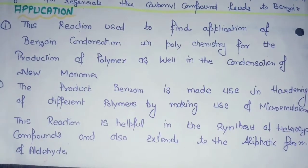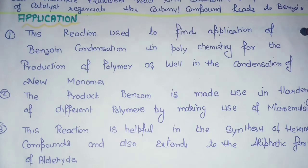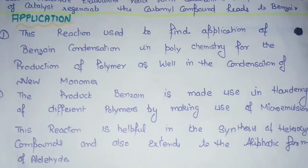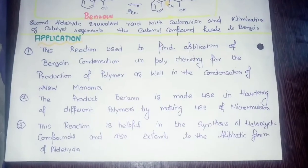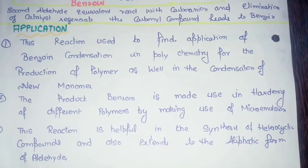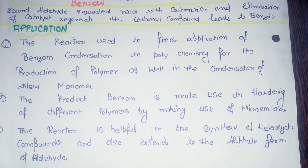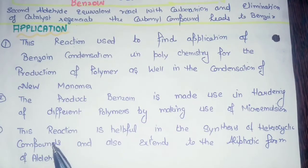It is obvious that polymers can be made by condensation, so it is related to polychemistry. We do it for new monomer production of polymers. The product benzoin is used for hardening with different polymers made by micro-emulsion method. The reaction is helpful in the synthesis of heterocyclic compounds and aliphatic formic aldehyde.